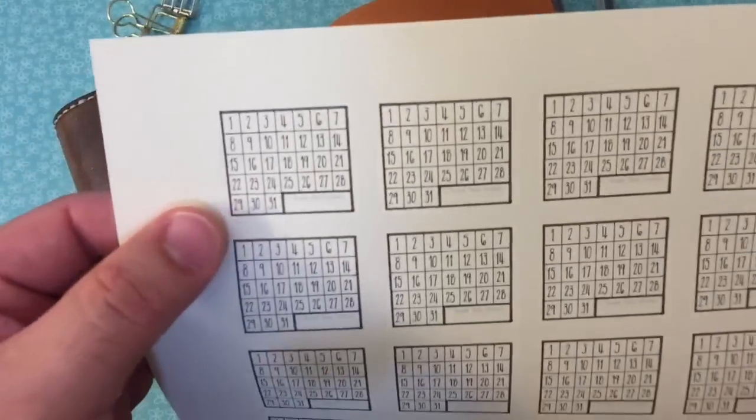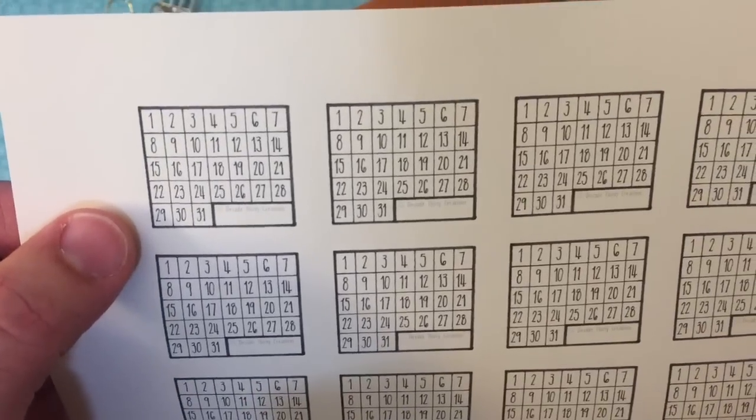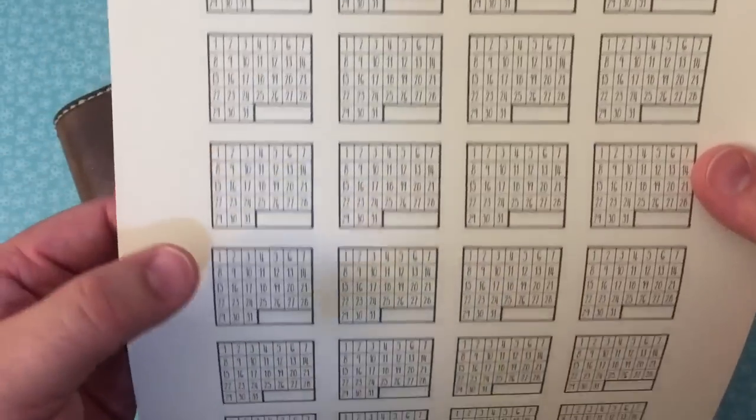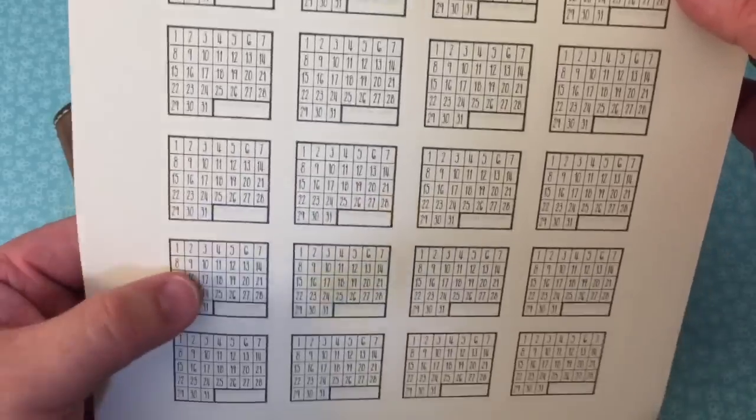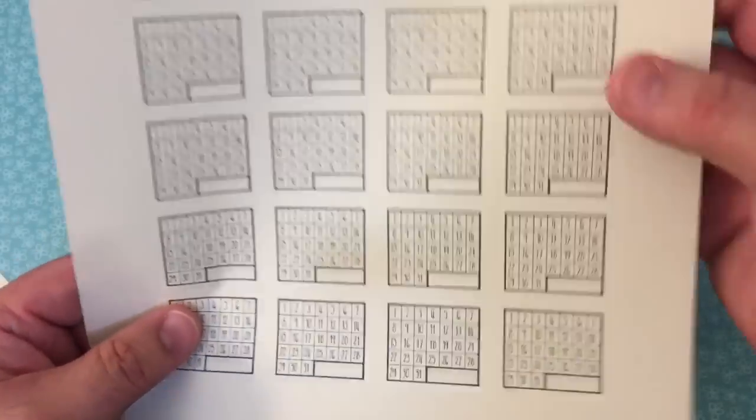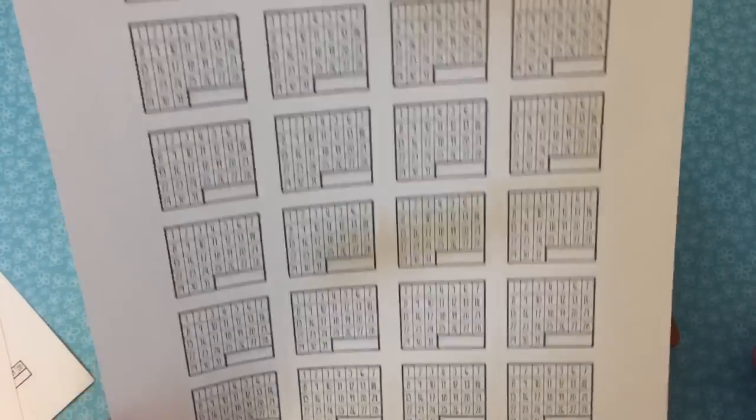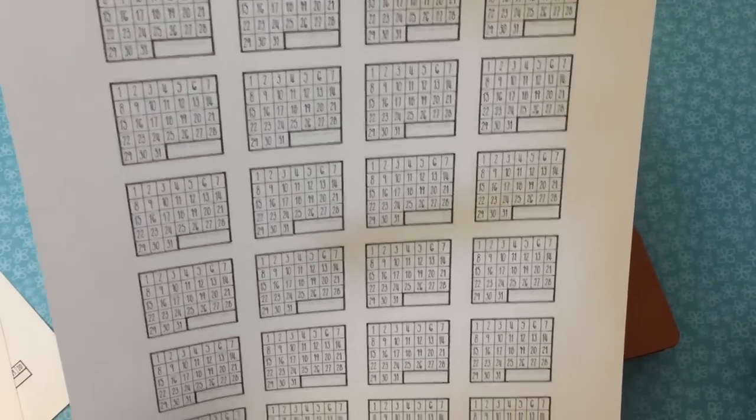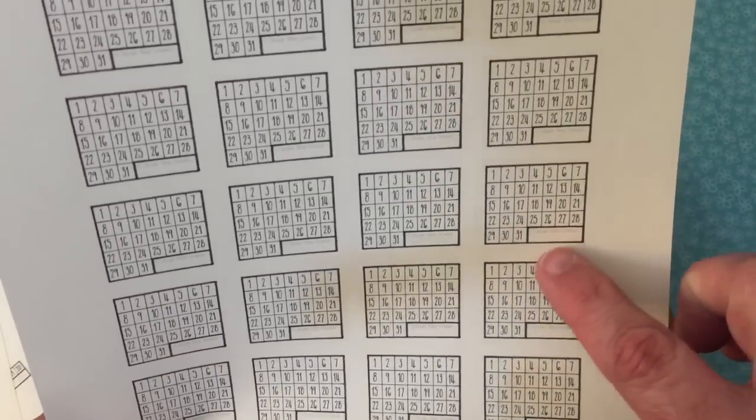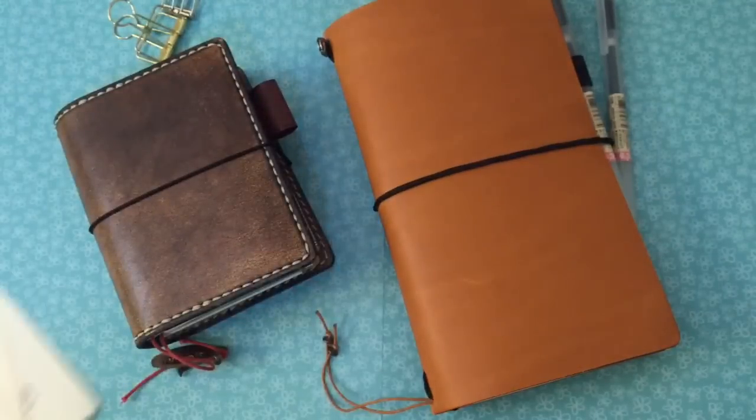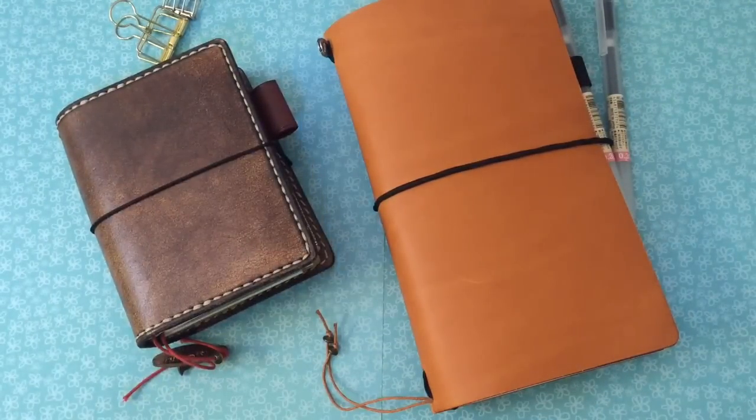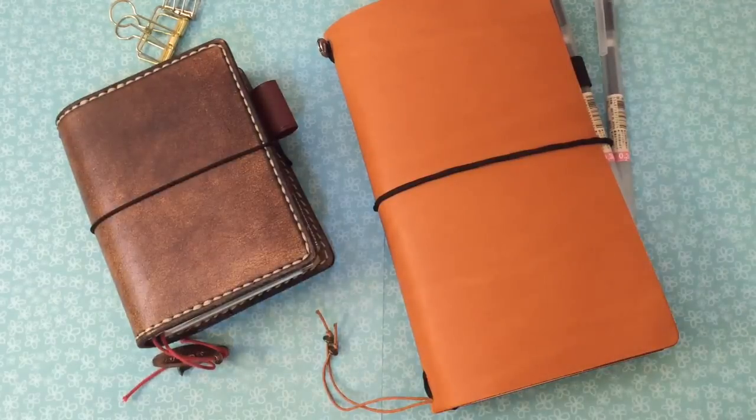Then this size where you get 28 with this one because it's more of a square size. And you've got this little space where you can write what it is you're wanting to track. So there are those.